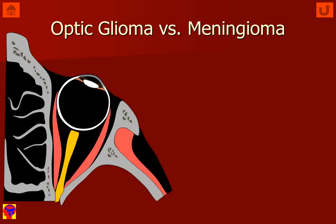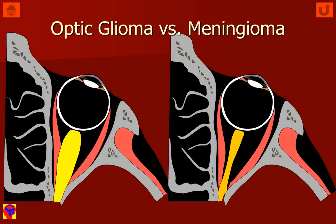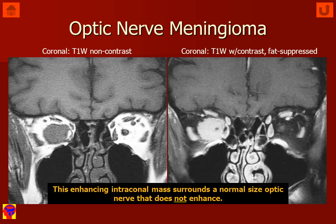In comparing the imaging appearance of optic nerve glioma versus meningioma, we want to recognize that the optic nerve glioma enlarges the optic nerve in the center of the muscle cone. In contrast, in a patient with an optic nerve sheath meningioma, the tumor—the meningioma—is wrapped around the outside of the optic nerve, and very commonly a non-enhancing optic nerve may be identified in the center of the enhancing mass lesion.